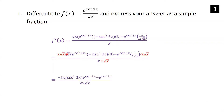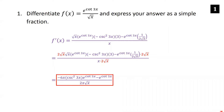So 3 times 2 with the minus sign gives us negative 6. Root x times root x is x — giving us negative 6x cosecant squared 3x e to the cotangent 3x. Over here, the 2 root x cancels, and we just get e to the cotangent 3x. On the bottom, I rewrote this as 2x root x. That is now a simple fraction.